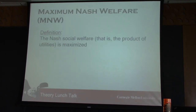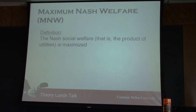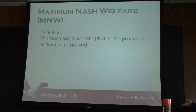Here comes the main definition of our talk: the ultimate solution for fair division — Maximum Nash Welfare (MNW). The definition is simple: if an allocation maximizes the Nash social welfare, which is the product of all players' utilities, we say this allocation satisfies maximum Nash welfare.